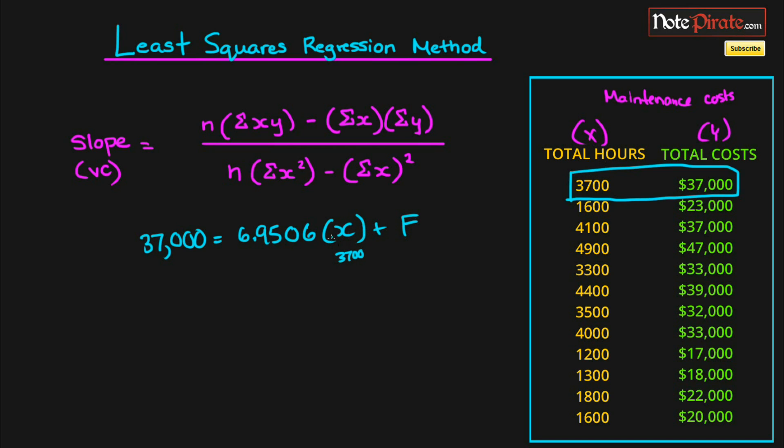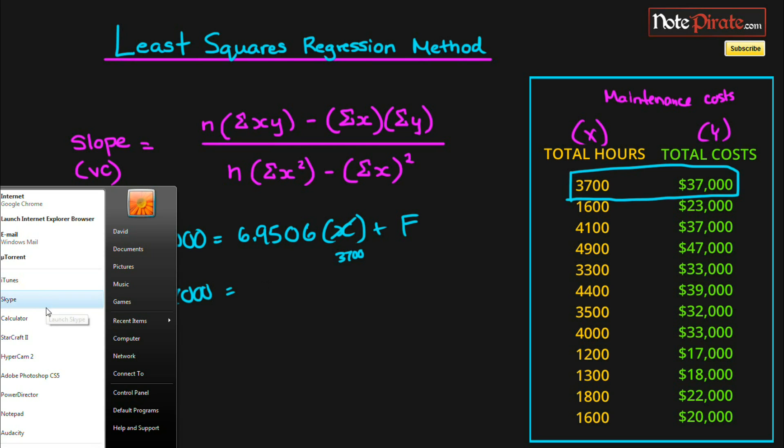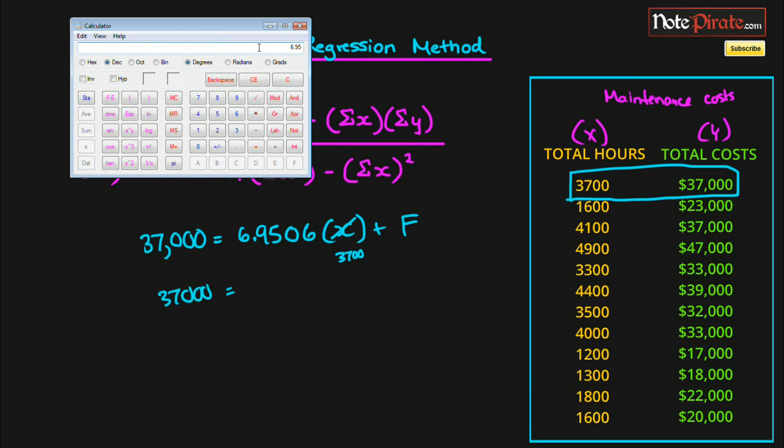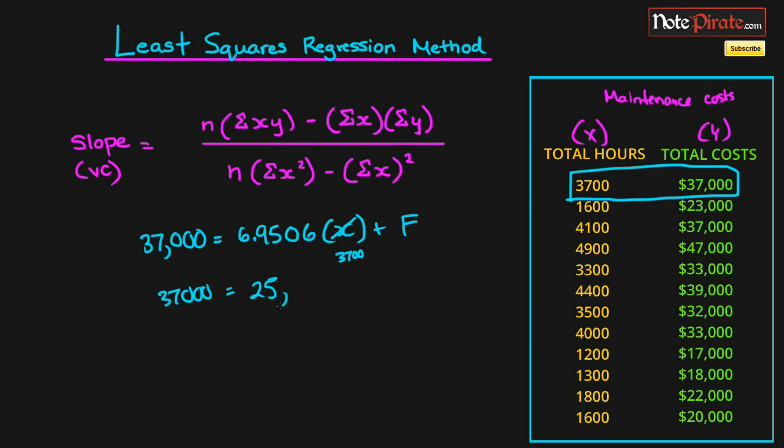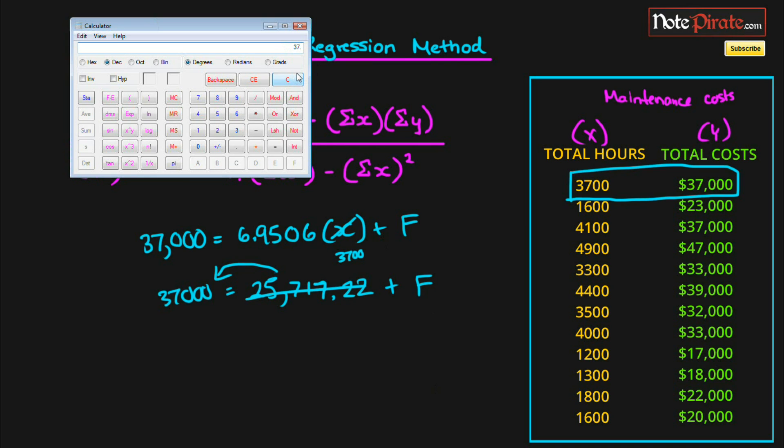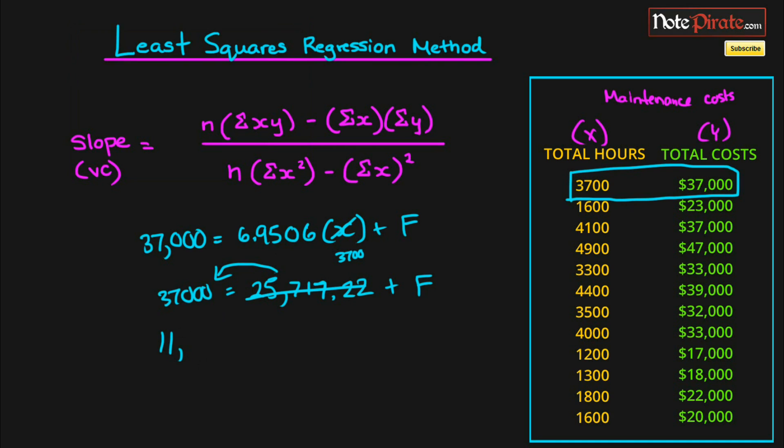And then we'll expand it. 37,000... let me calculate it really quickly. 6.9506 times 3,700 is 25,717.22 plus F. Then we move this onto the other side by subtracting it from 37,000, giving us a value of 25,717.22. So our fixed cost is actually going to be $11,282.78.